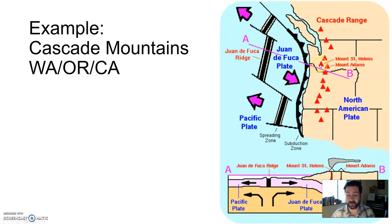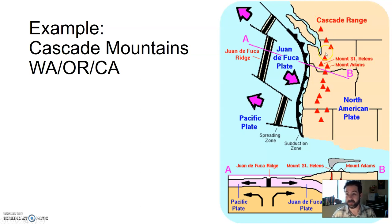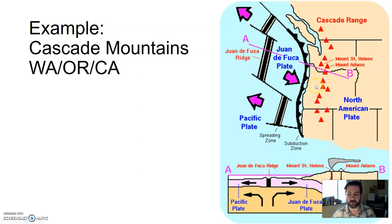This convergence is creating an arc of volcanic mountains — Mount St. Helens, Mount Adams, Mount Rainier, and any number of mountains in the Cascade Range are volcanic. Large earthquakes are also very common here. This is what happens when you get oceanic crust colliding with continental crust.